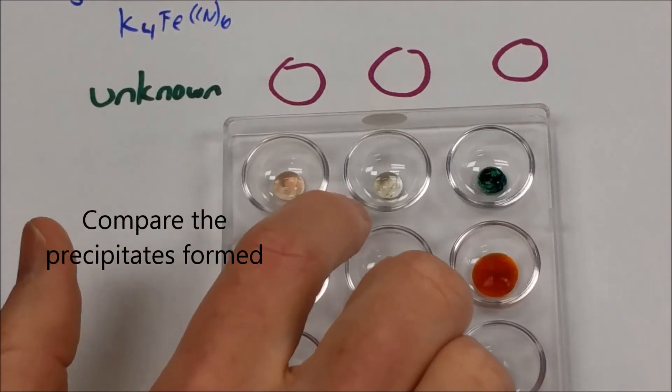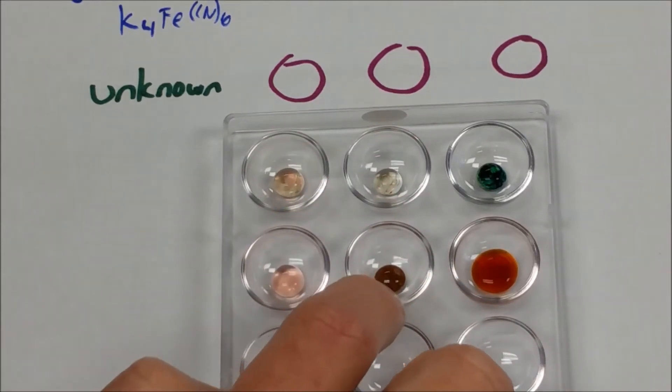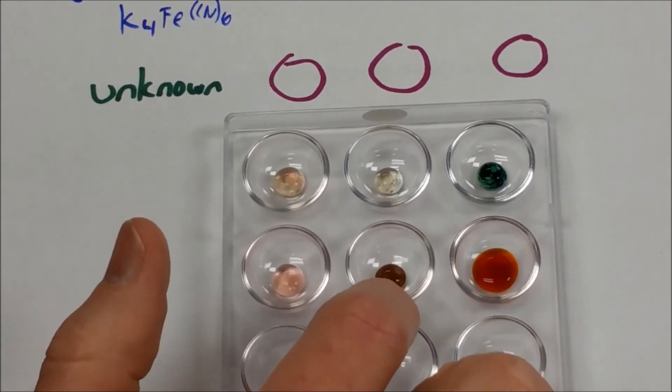And then here we're looking at what the standard ferrocyanide did with copper, and here we're looking at what our unknown did. And are they the same or are they different?